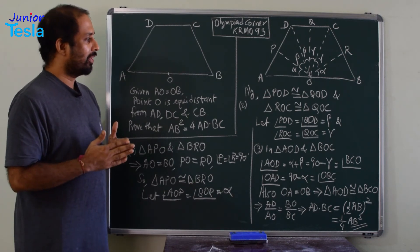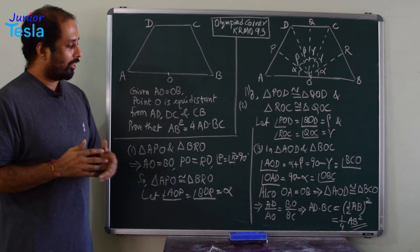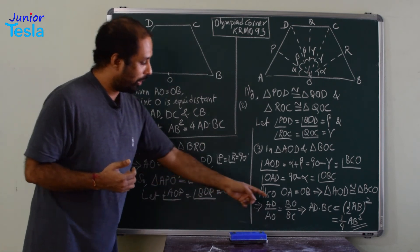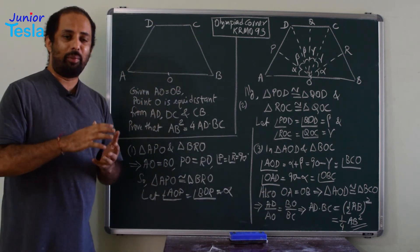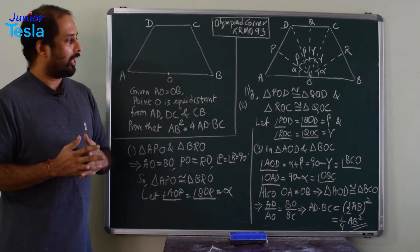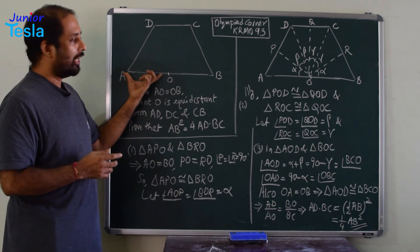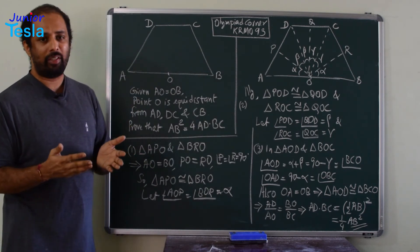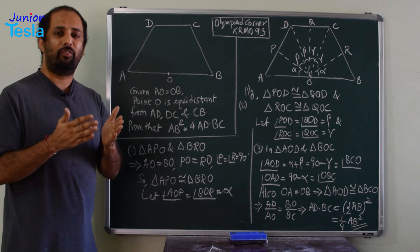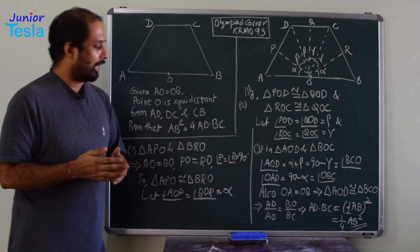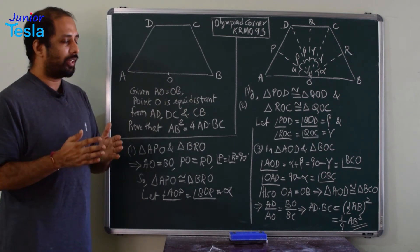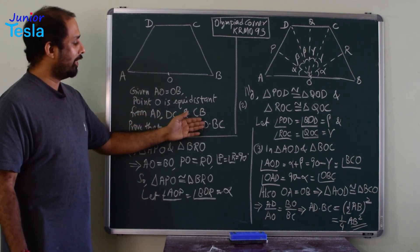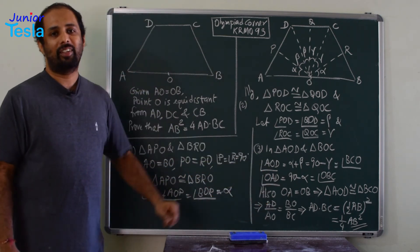Since triangles AOD and BCO are congruent, we can write the ratio: AD/AO = BO/BC. Cross-multiplying gives AD · BC = BO · AO. Now AO = ½ · AB and BO = ½ · AB, so AO · BO = ½ · AB × ½ · AB = ¼ · AB². Therefore 4 · AD · BC = AB², and that is what we were supposed to prove. AB² = 4 · AD · BC is proved.